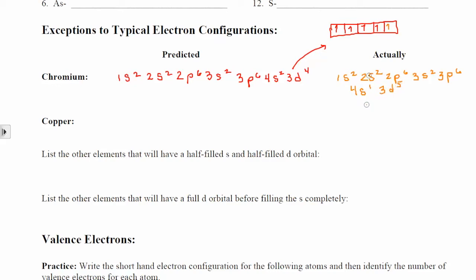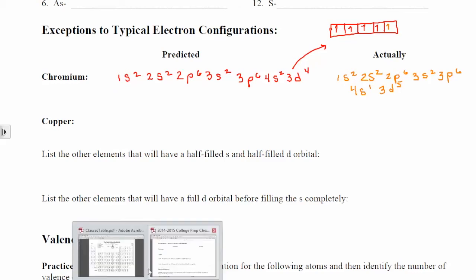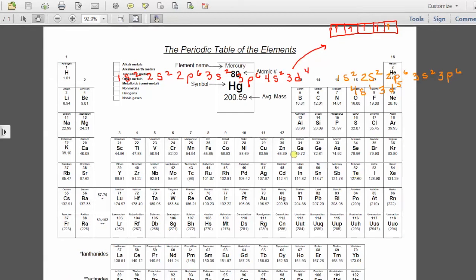When does this exception occur? Looking at the periodic table, for chromium's entire group — this entire column — this exception will occur. This is because it's 3d4 and it wants to become 3d5. Similarly, 4d4 becomes 4d5, 5d4 becomes 5d5, and 6d4 becomes 6d5. So across this entire column, you will never have d4 — it will always become d5 by stealing an electron from the s orbital before it.